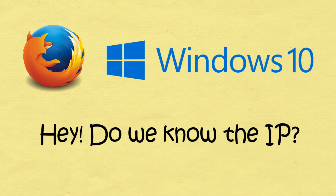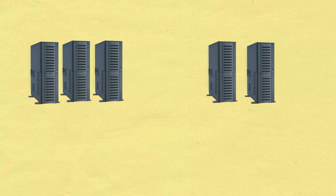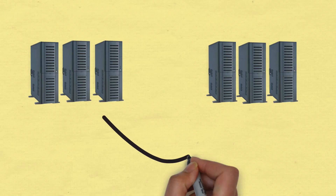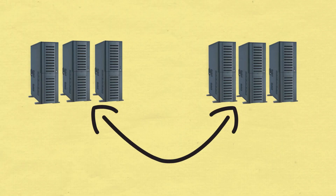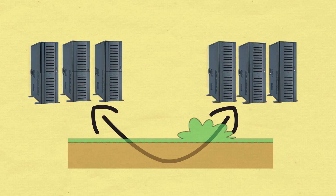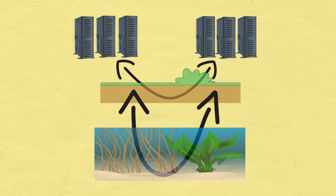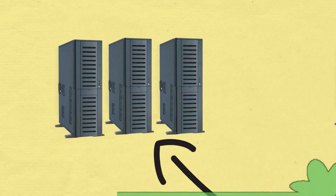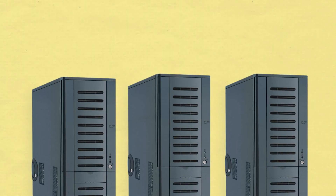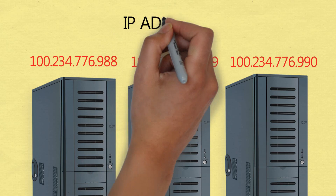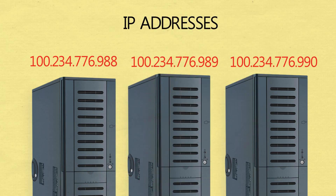So what's an IP address? The computers that make up the internet are set up in large networks that communicate with each other via underground or underwater cables, and are identified using strings of numbers known as IP addresses.